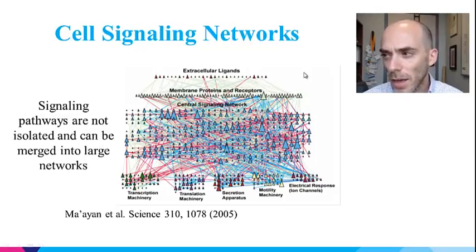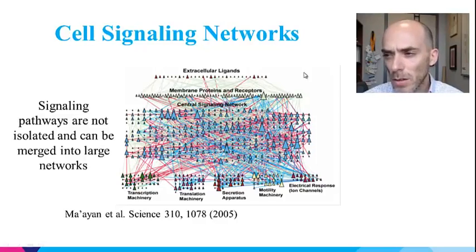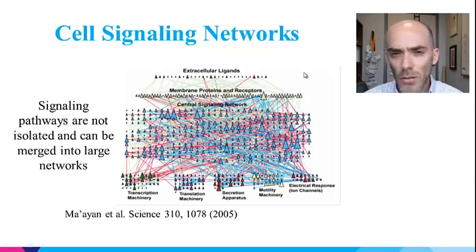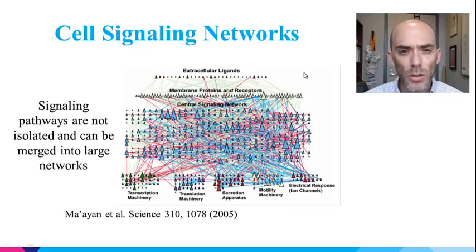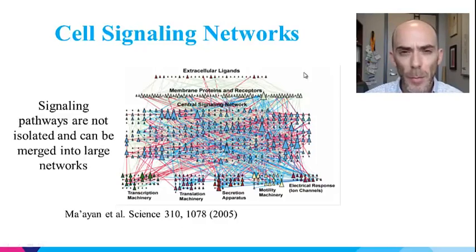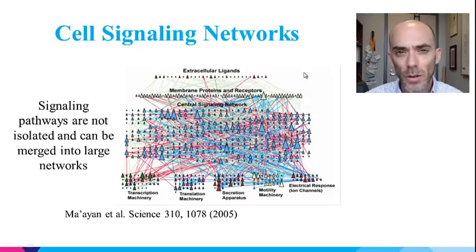This network connects ligand receptor interactions to their downstream effectors, and those pathways terminate at components from different cellular machines such as transcription, translation, secretion, motility, and ion channel regulation. As you can see, the system is much more complex, and this represents only maybe five to ten percent of all the components and interactions happening in the cell signaling network that controls the cell.